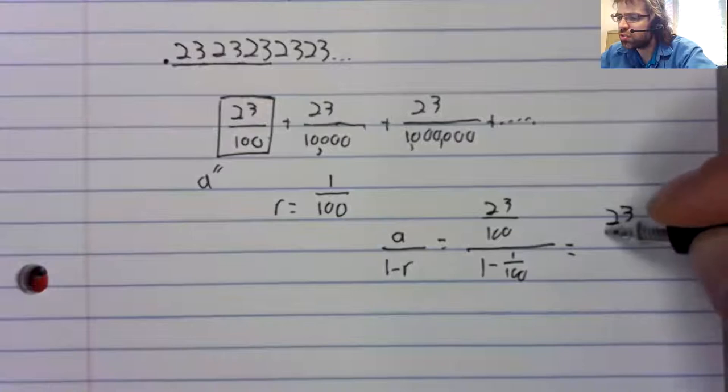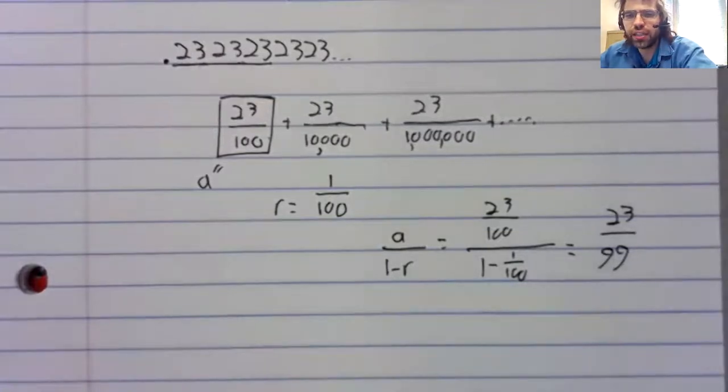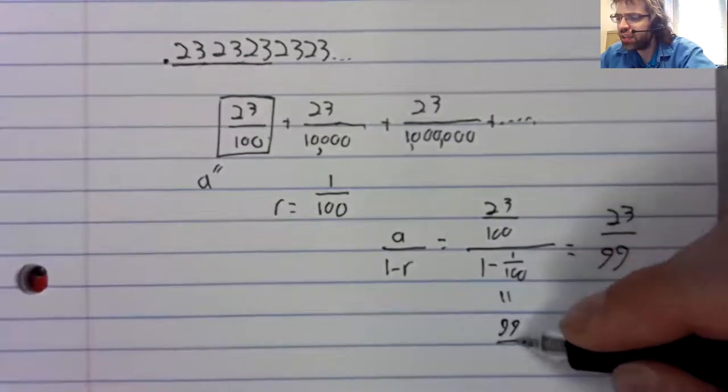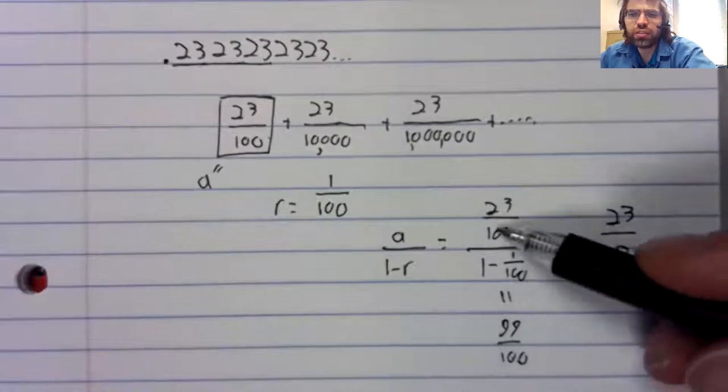And that's 23 over 99. This is 99 over 100 and the 100s cancel.